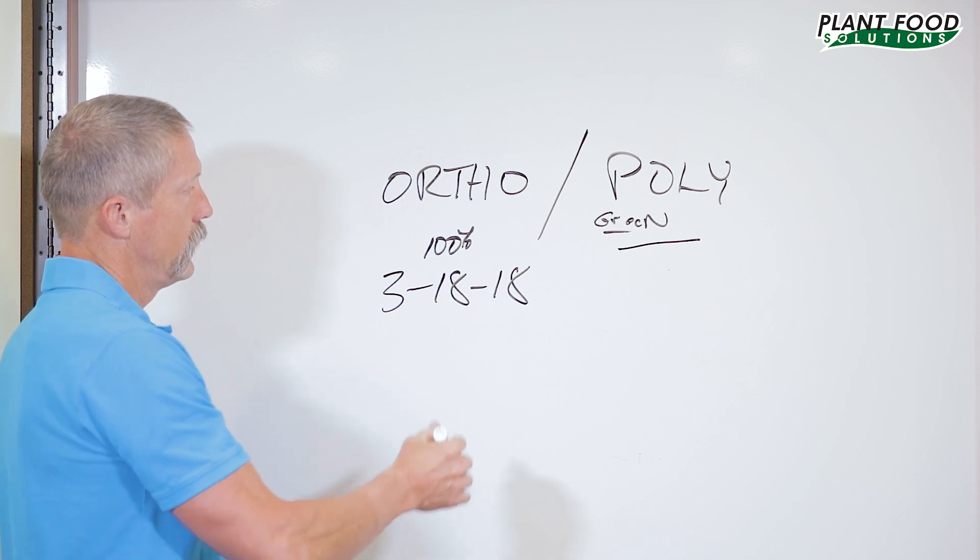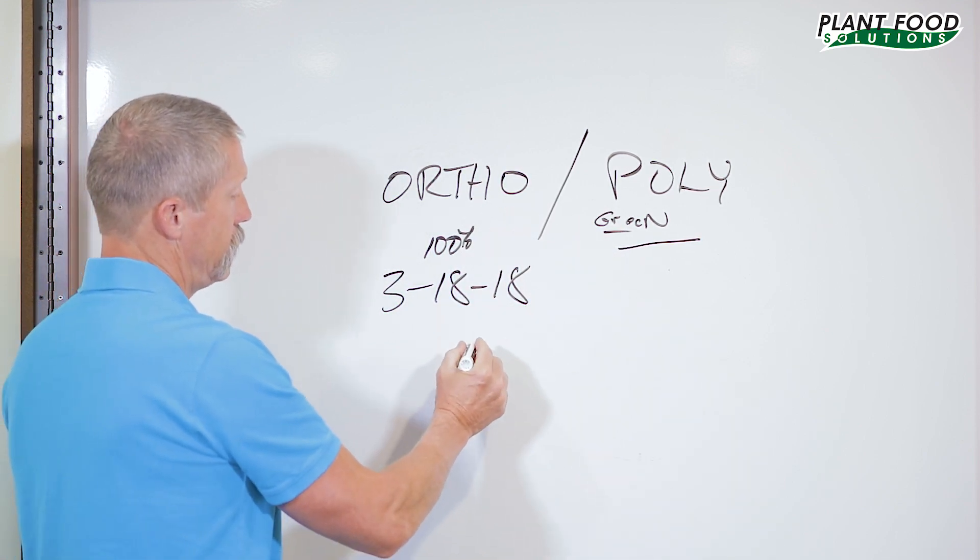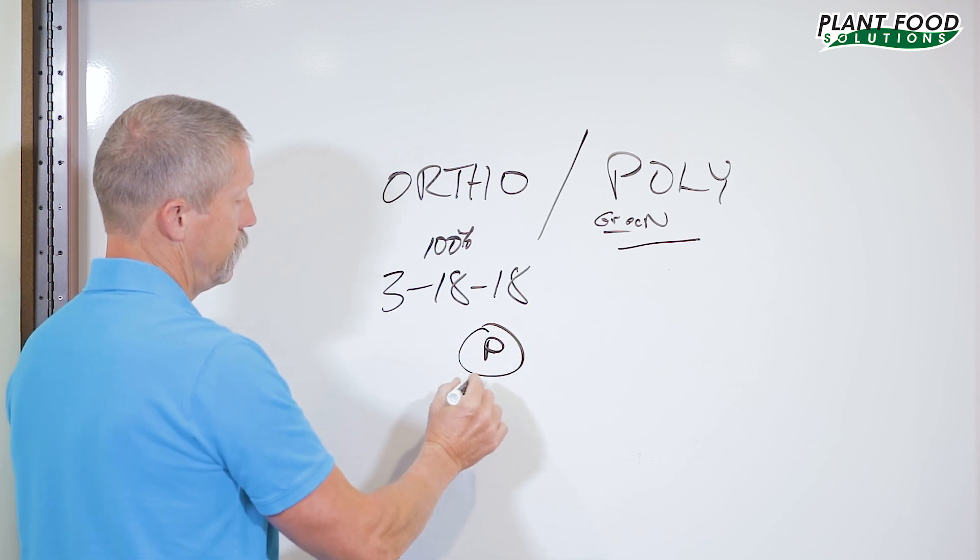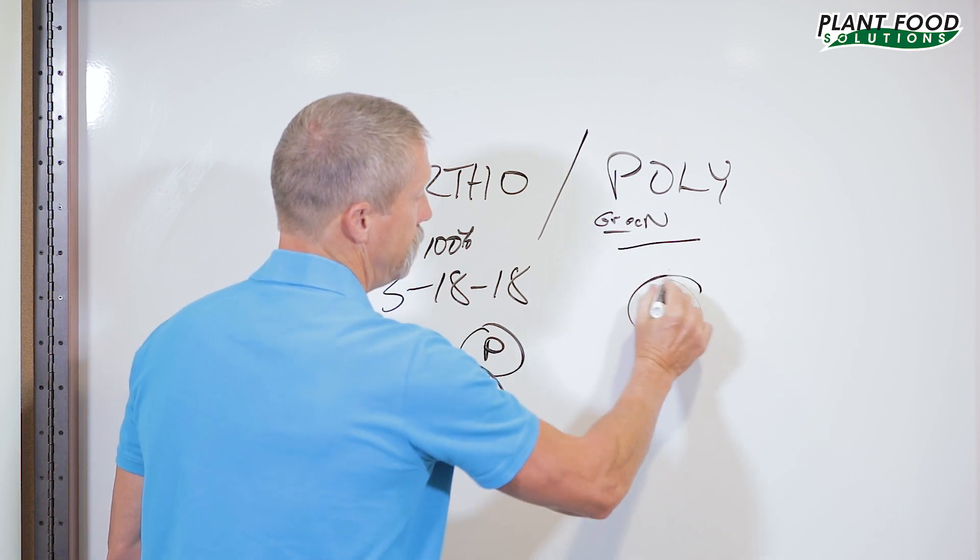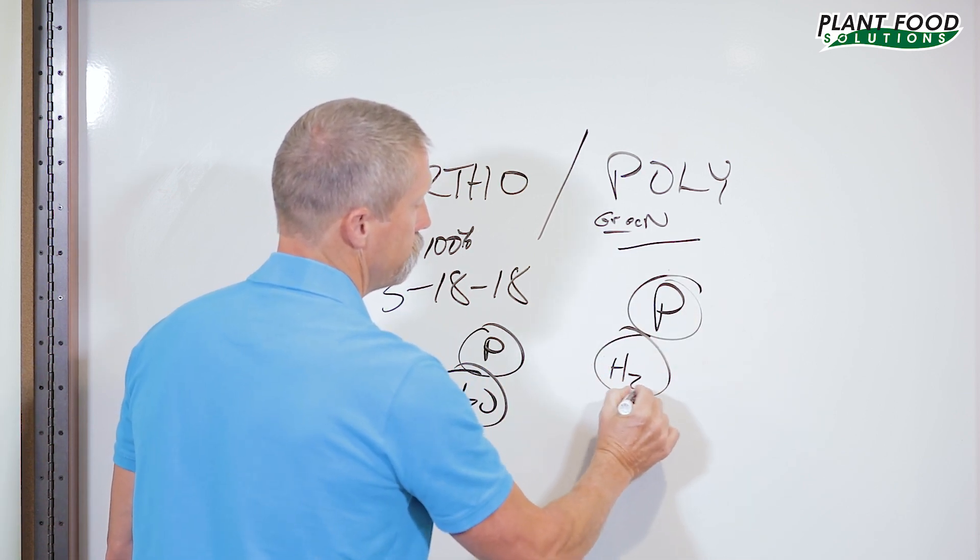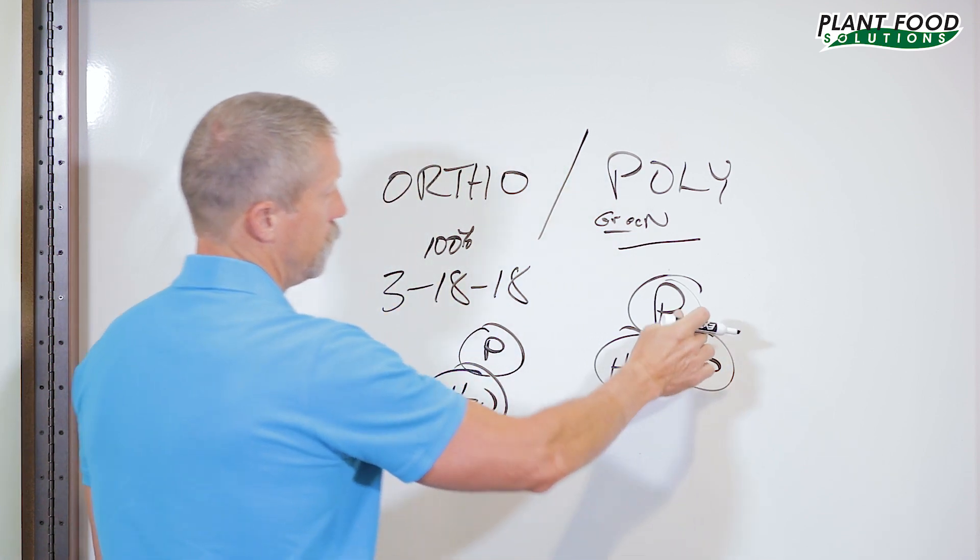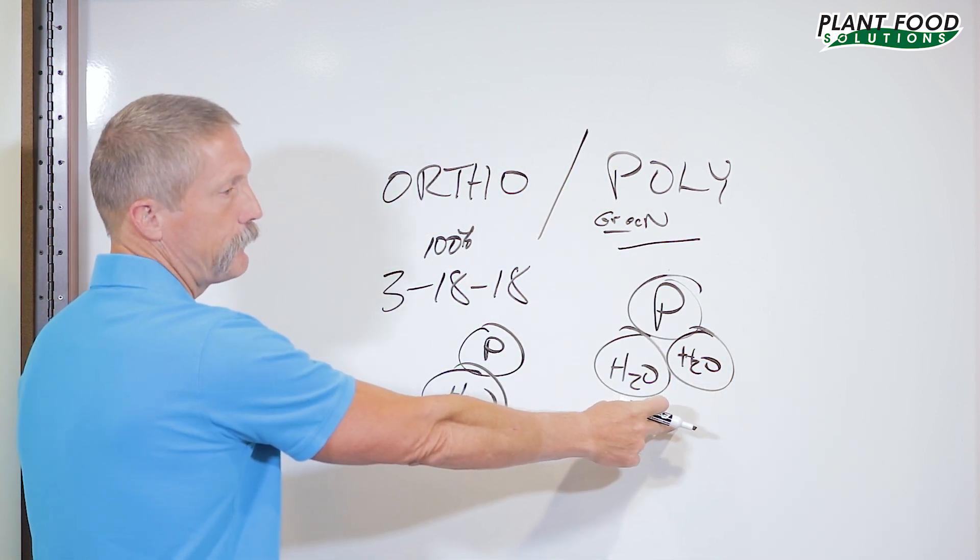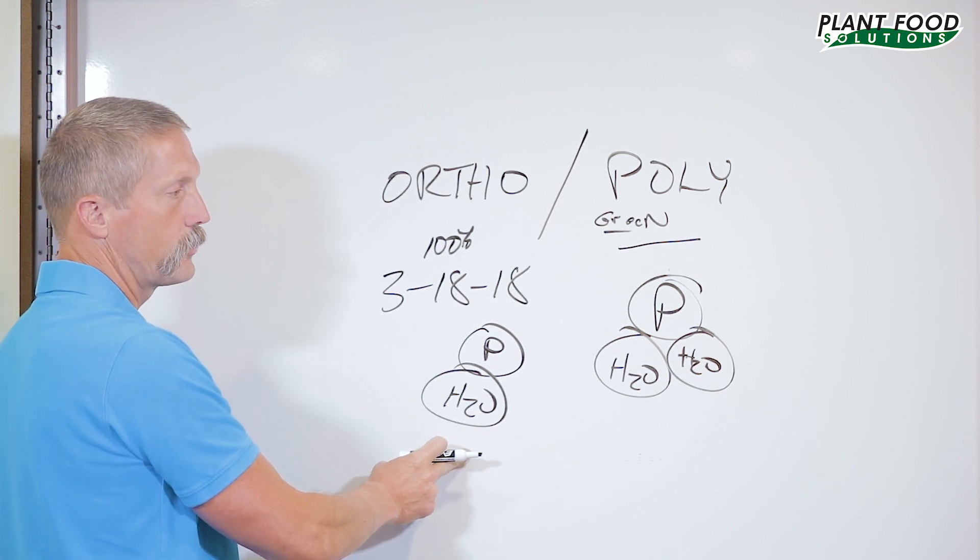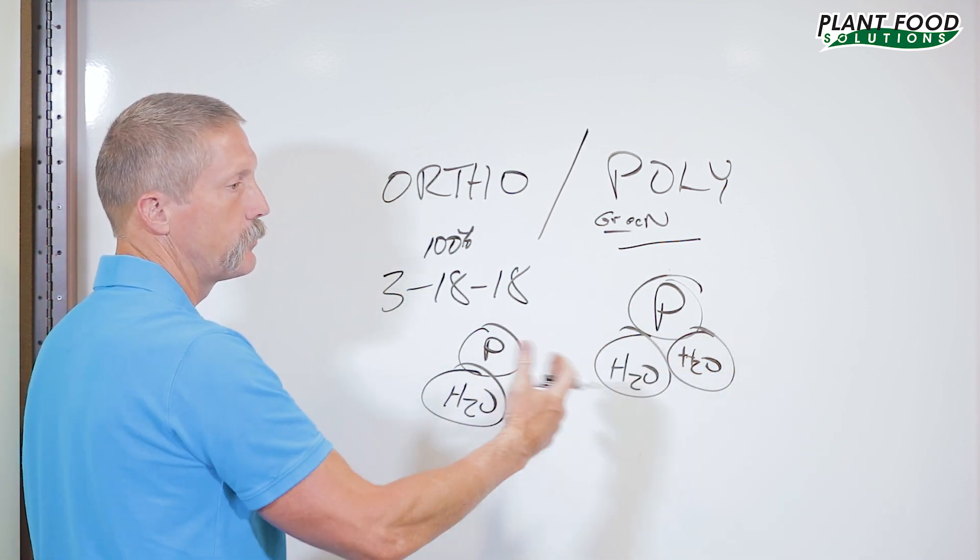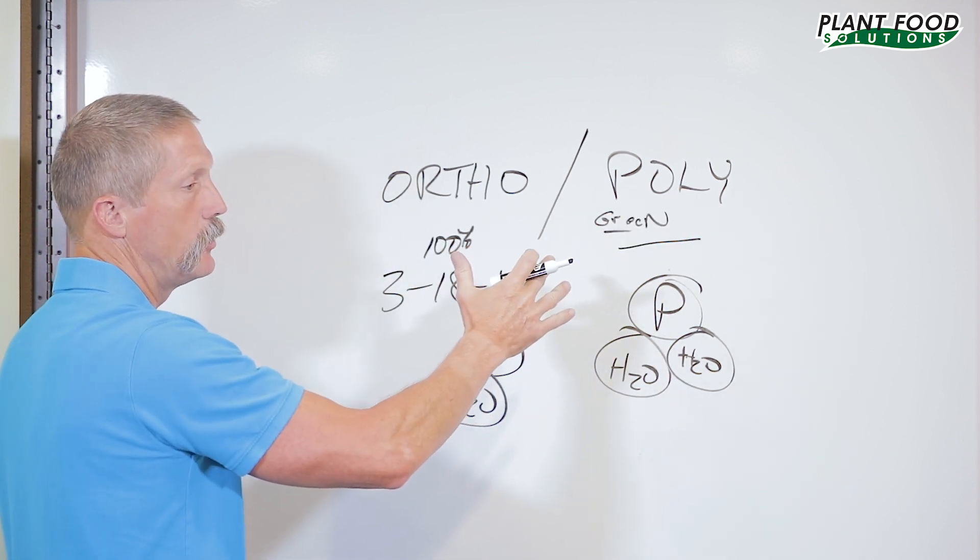Remember, a lot of companies will want to tell you that this poly is there because of slow release. What poly versus ortho is, is basically you've got a phosphate in one water. That's ortho. And over here, poly is a phosphate and it's got two waters. You can heat polyphosphate up and turn it into ortho, or you can add water to ortho and turn it into poly, as long as it's just phosphate alone.